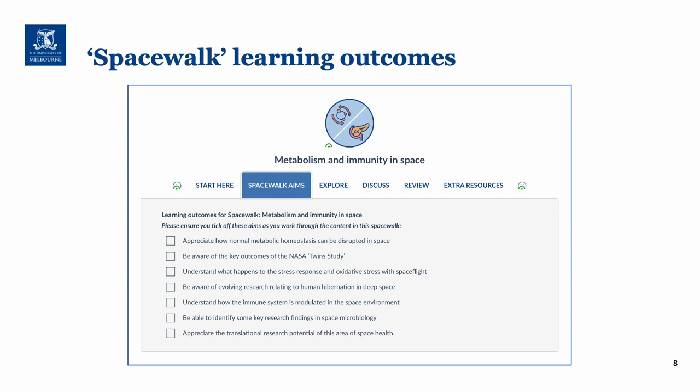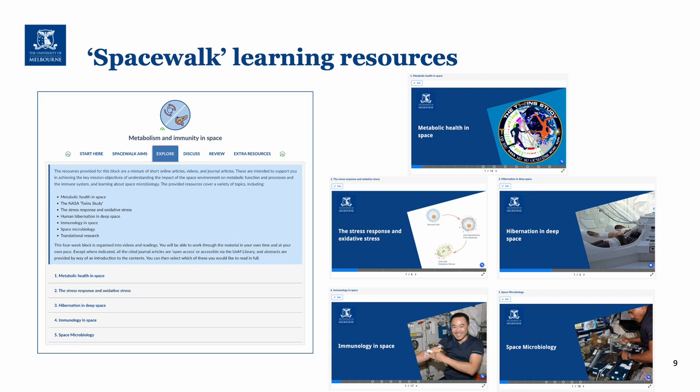The learning objectives for this block reflect what's included in the explore section and broadly that covers: metabolic homeostasis in space, the key outcomes of the NASA twin study, stress response and oxidative stress in spaceflight, human hibernation in deep space — a really interesting topic — how the immune system is modulated in space, some key findings in space microbiology, and the translational research potential of this area of space health. The explore topics are divided up into five broad areas: metabolic health in space, the stress response and oxidative stress, hibernation in deep space, immunology in space, and space microbiology.